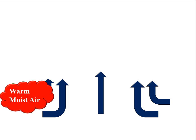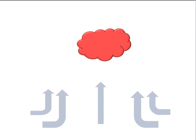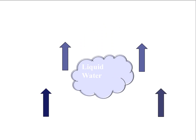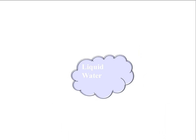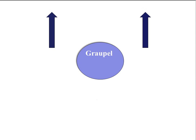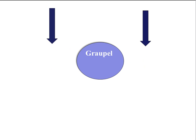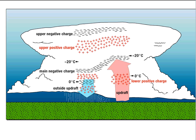Inside the thunderstorm, the updraft continues to bring in warm, moist air. As this air gets lifted, it condenses into a liquid. As this liquid gets higher and higher in the atmosphere, it gets colder and colder until it freezes into ice crystals and graupel, which is small ice. As the graupel starts to fall to the earth, it hits ice crystals on the way down. This collision causes an electron to be lost or added, depending on the temperature, to the graupel. As a result, large areas of positive and negative charge exist within the thunderstorm.